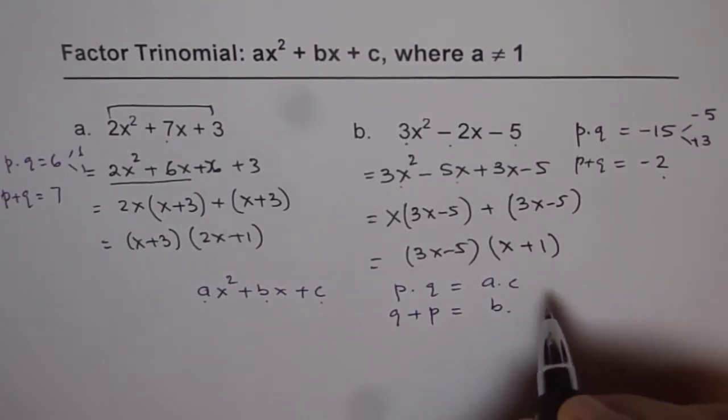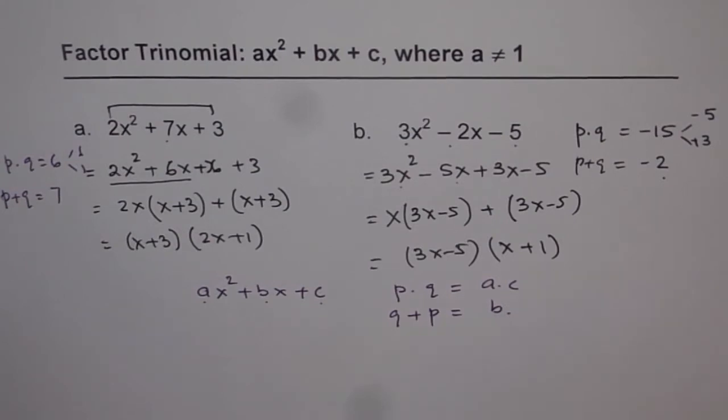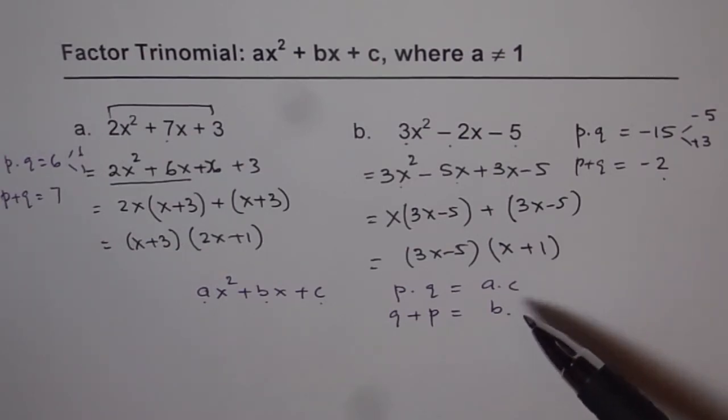Why? If you can find two numbers which satisfy this, only then you can factor. Otherwise, you cannot factor a trinomial. Therefore, it is important to note that all trinomials cannot be factored. Only those which will satisfy this combination can be factored. Thank you.